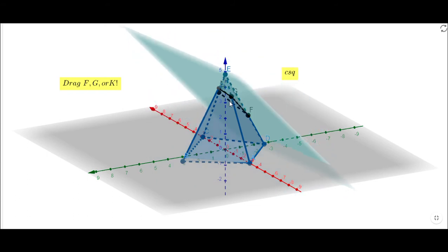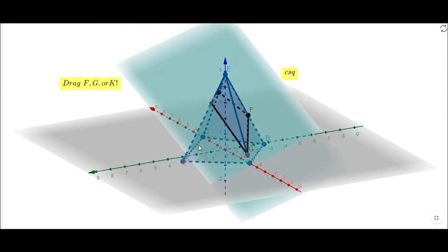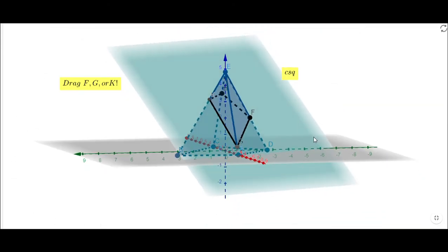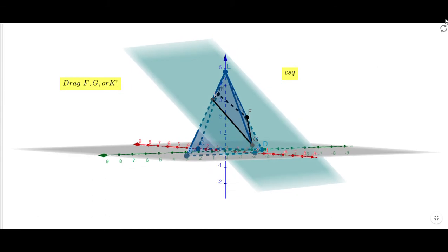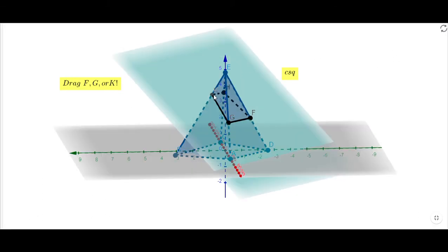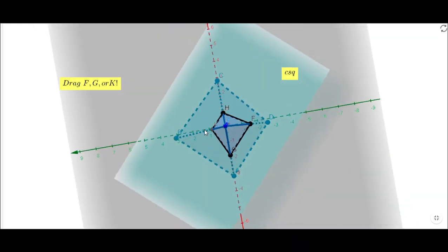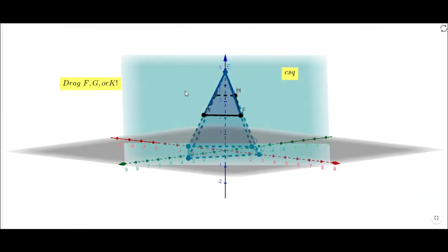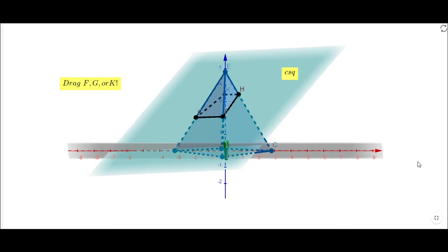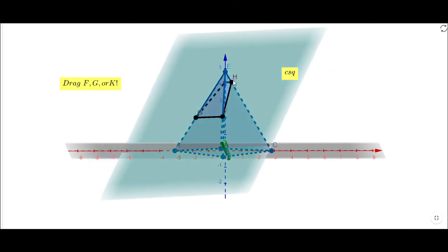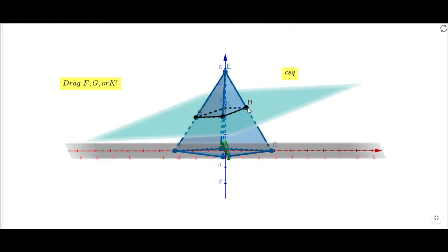When you have a plane crossing a rectangular pyramid, you can get a quadrilateral, a triangle, and more. Let's try point K — see what's going on. The point that actually works here is H, not K, so it's kind of similar to the other two points.